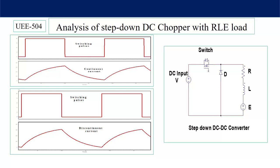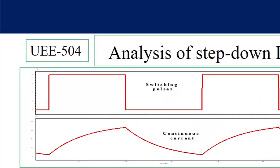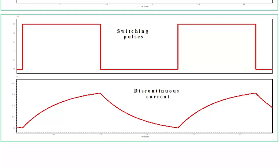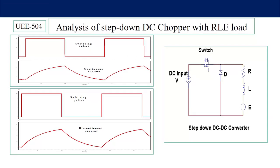Looking at the waveforms over one period: when the switch is on, current increases; when the switch is off, current decreases. The top waveform shows continuous current mode and the bottom shows discontinuous current. In continuous current mode the load current is never zero, whereas in discontinuous current mode the load current is zero for some duration of time. This distinction is very important for automatic speed control of DC motors, though we will restrict our discussion to the converter only.